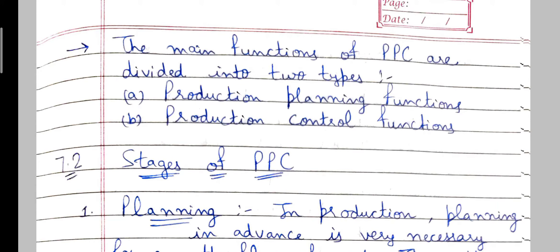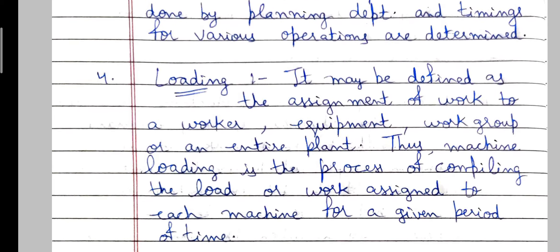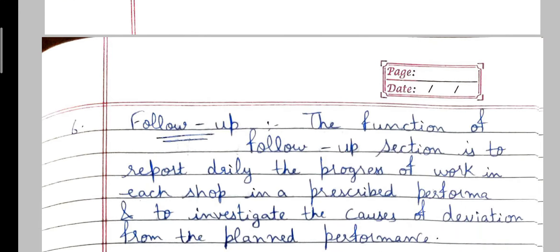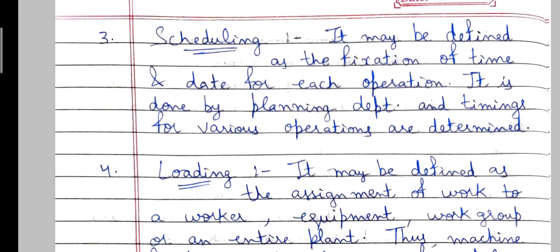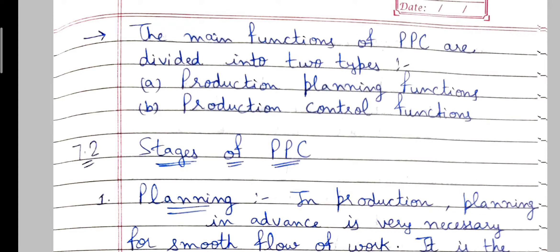Next are the functions of production planning and control. The main functions are divided into two types: production planning functions and production control functions. Under production planning functions there are four functions — planning, routing, scheduling, and loading. Under production control functions there are three functions — dispatching, follow-up, and inspection. So there are a total of seven sub-functions of production planning and control.